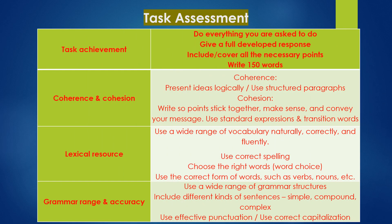Now let's take a look at the task assessment. Task achievement is 25%, in which you need to answer everything you're asked to do in the question. The other 25% is coherence and cohesion, in which you need to use structured paragraphs and make standard expressions. The other 25% is lexical resource, in which you need to use a wide range of vocabulary. And the last is grammar range and accuracy, in which you need to include different kinds of sentences ranging from simple, compound and complex.